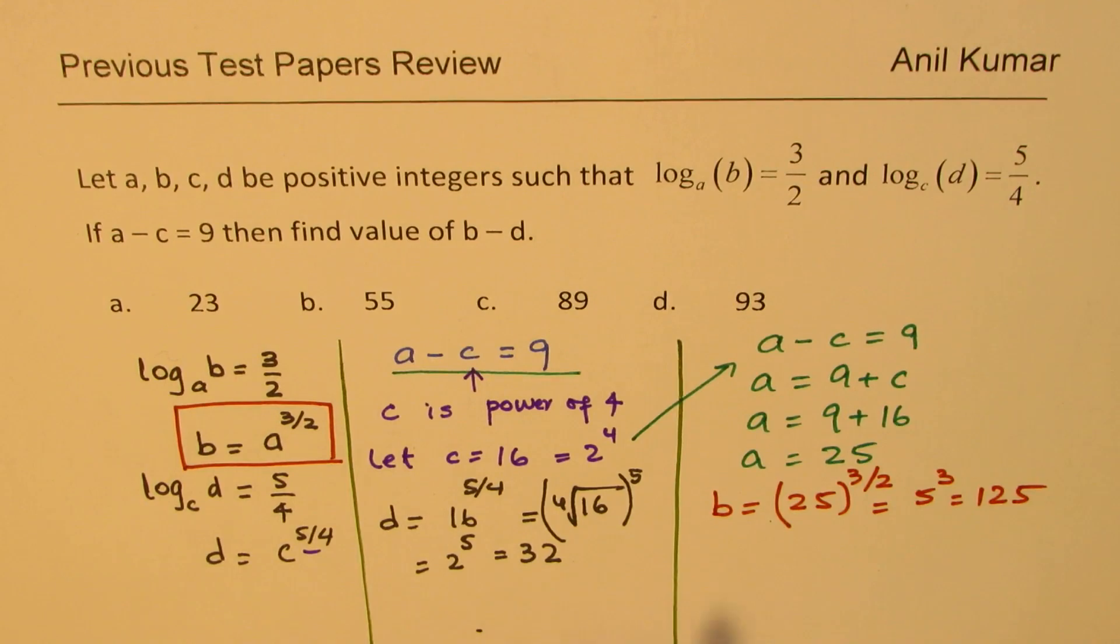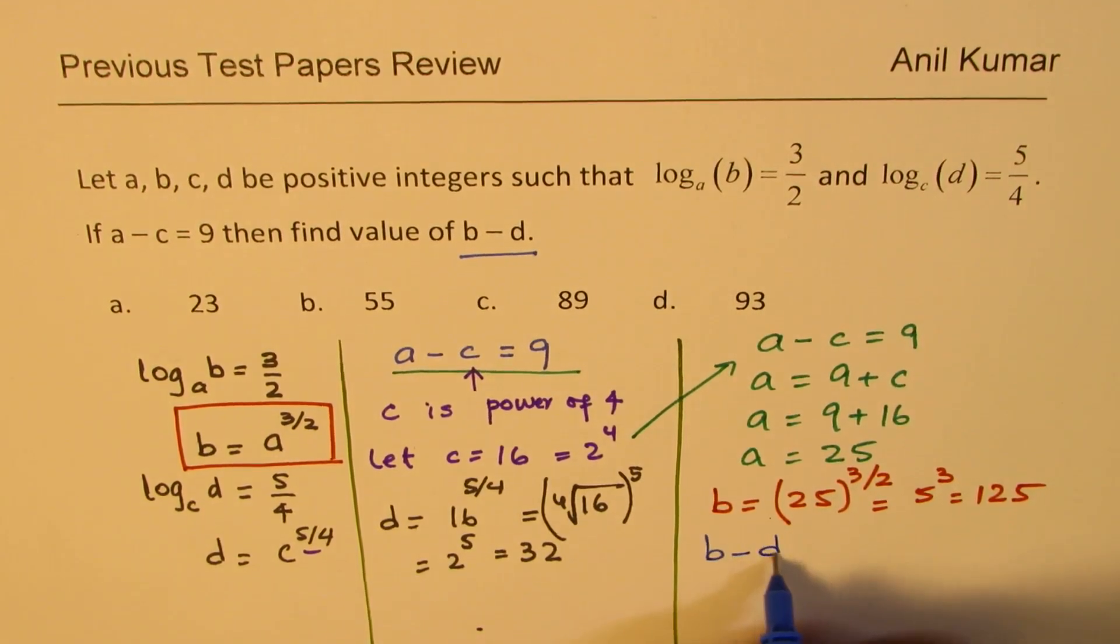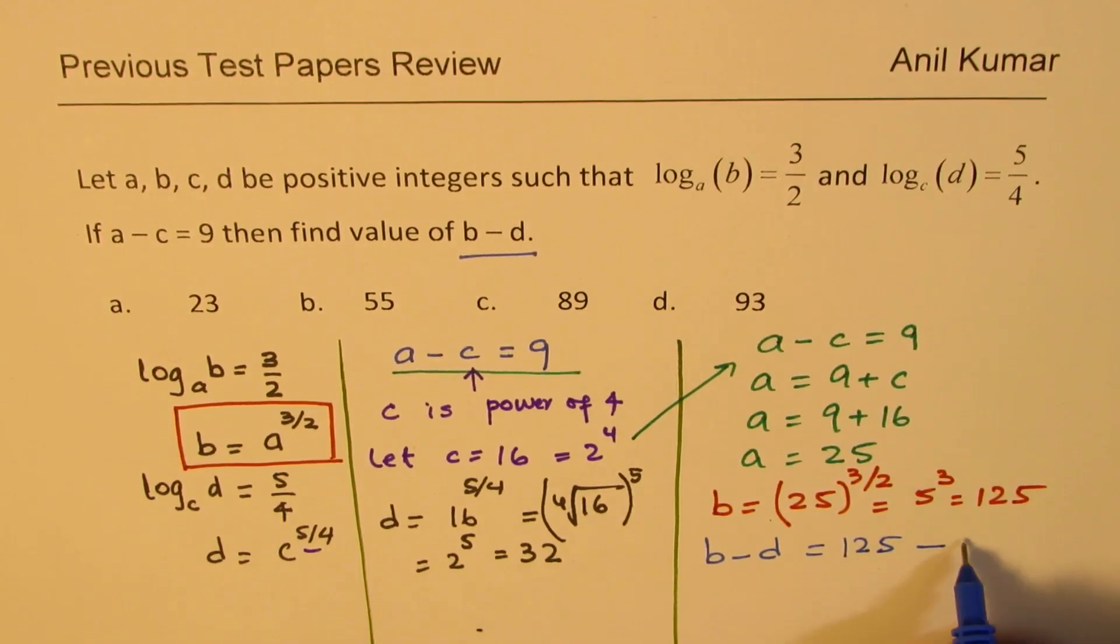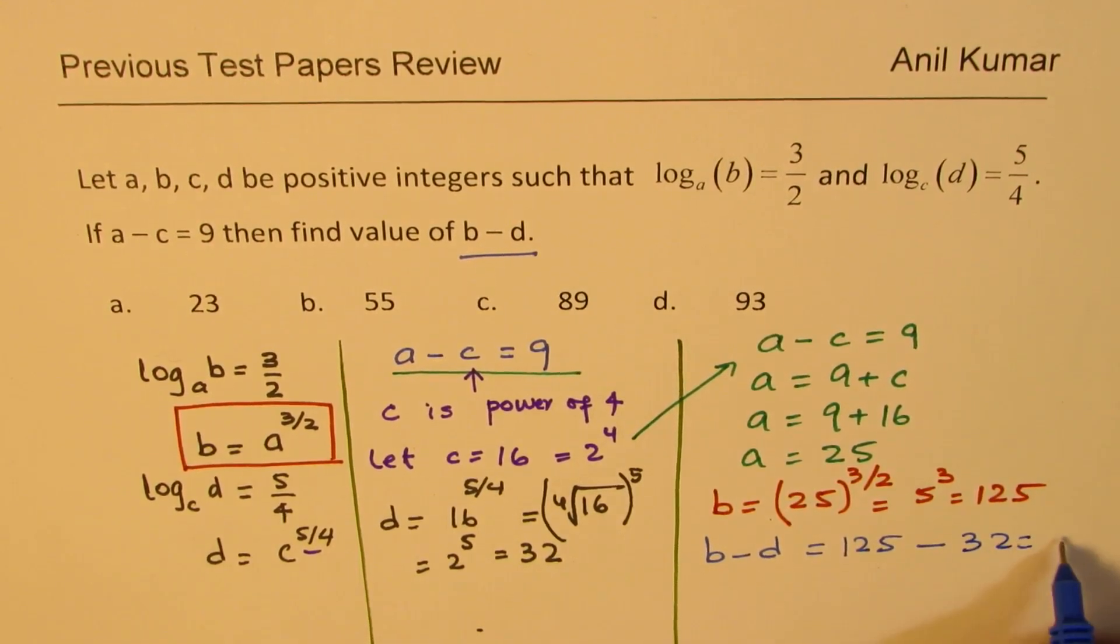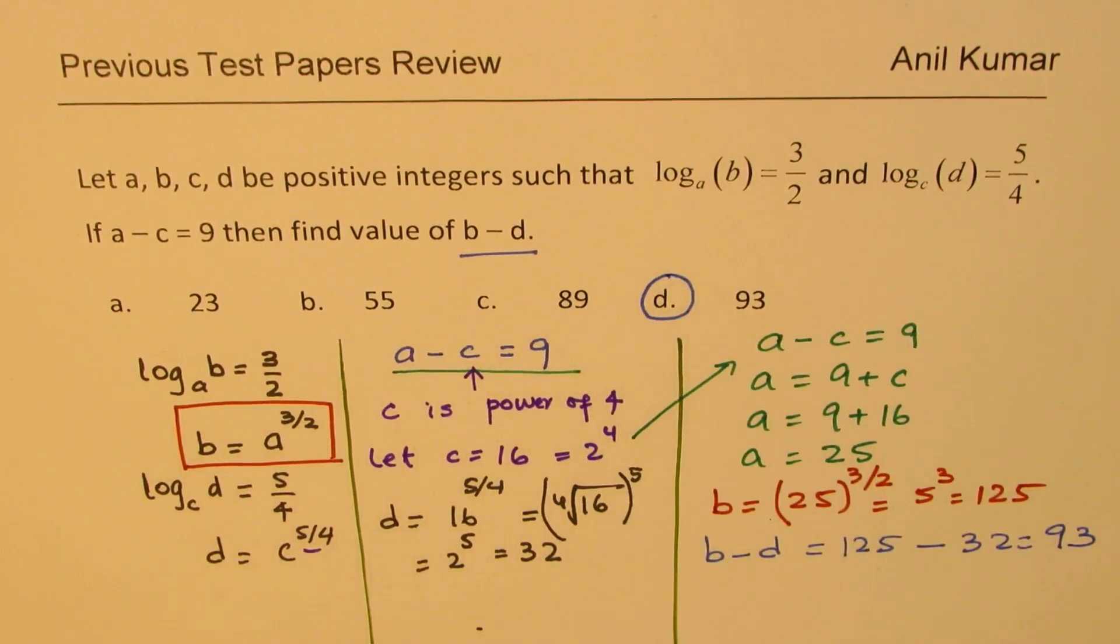Now since we have both the values of B and D we can actually find the difference between B and D. So what is the difference between B and D? Well B is 125 and D is 32. And their difference clearly is 93. So option D is the correct option.